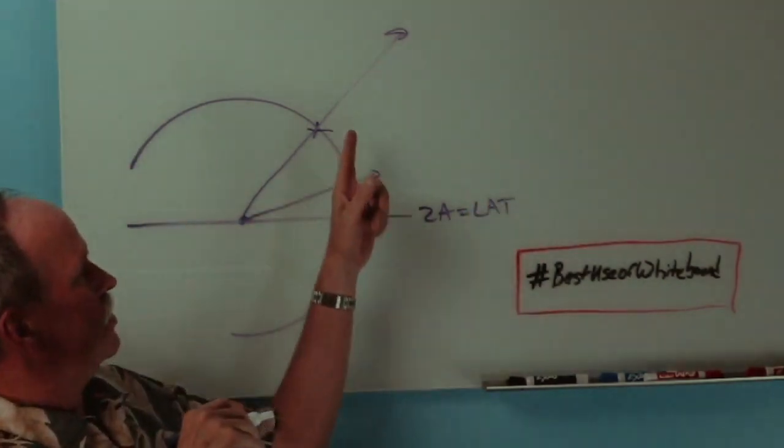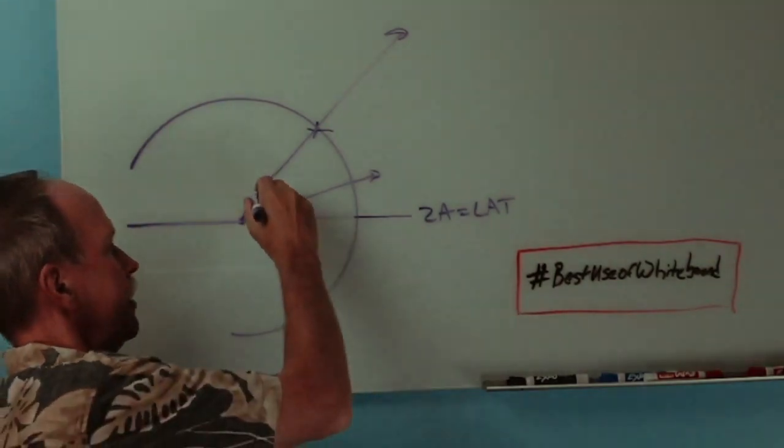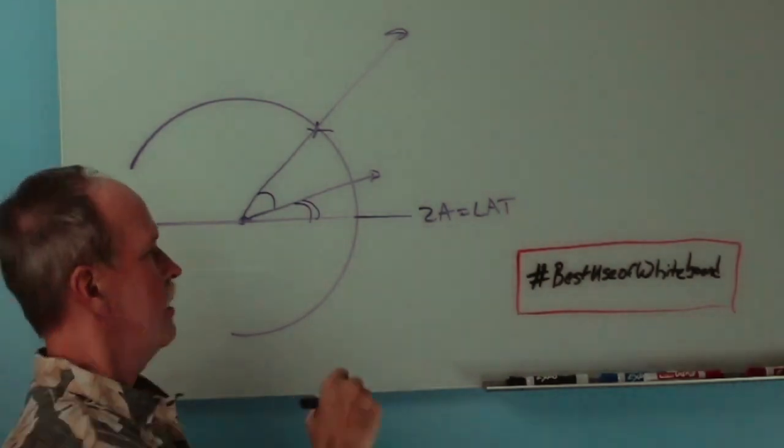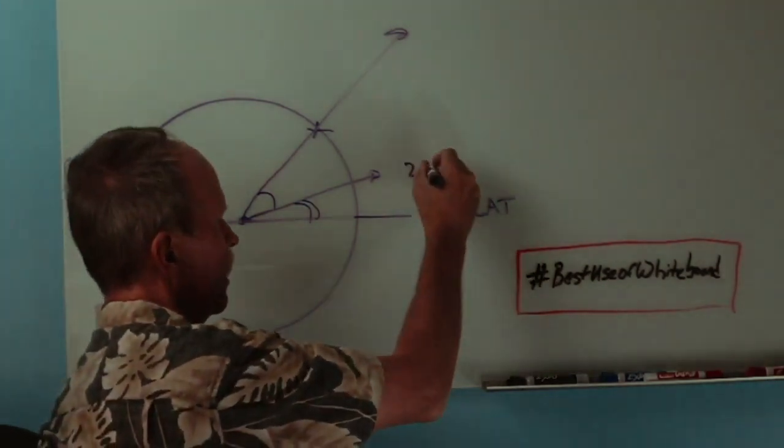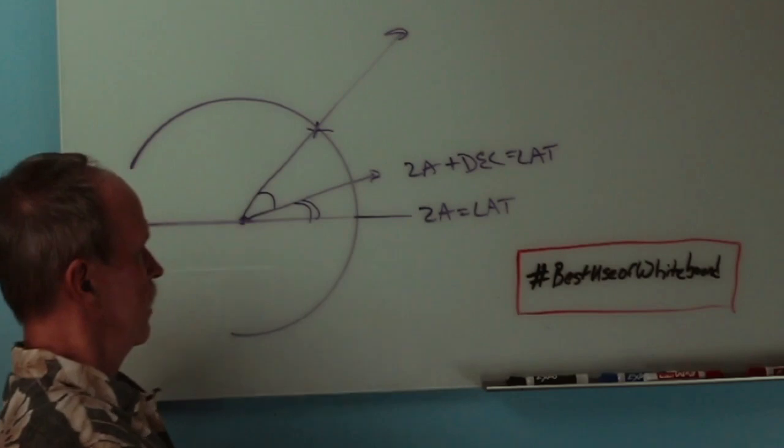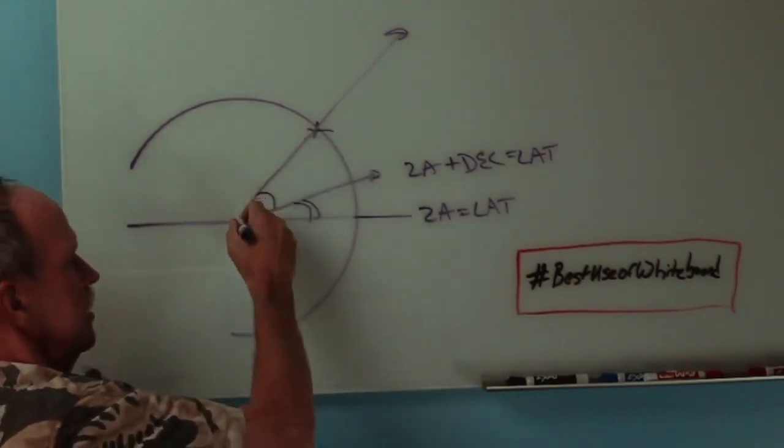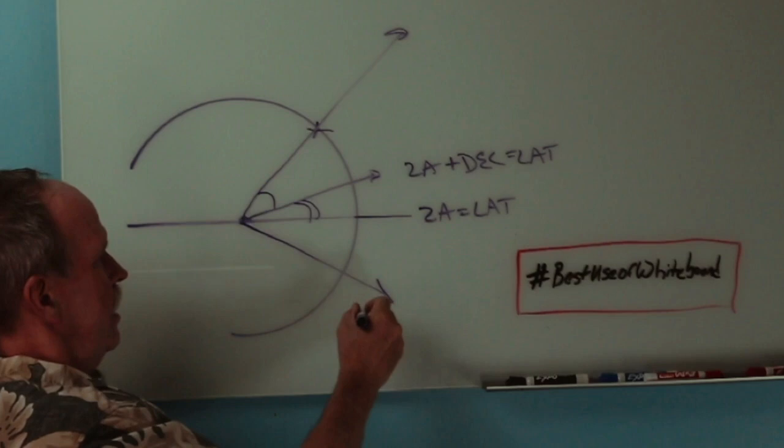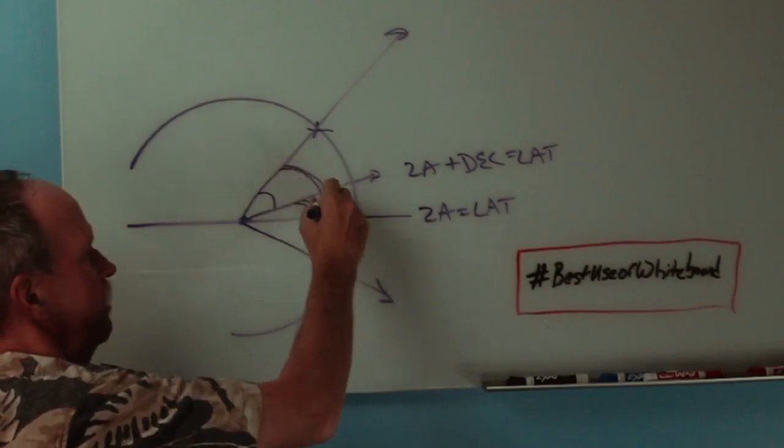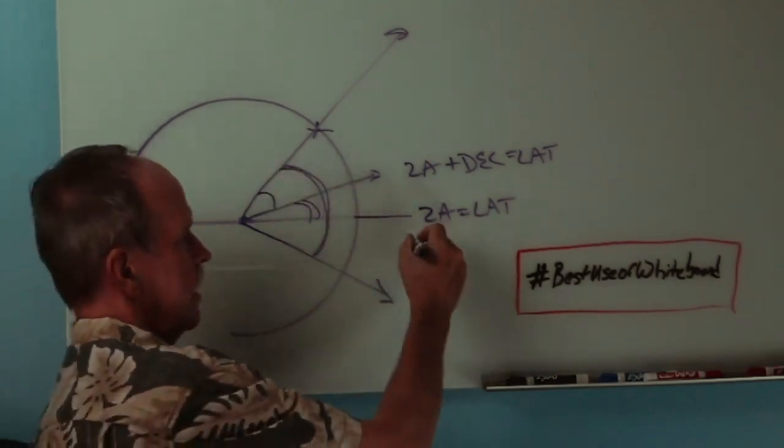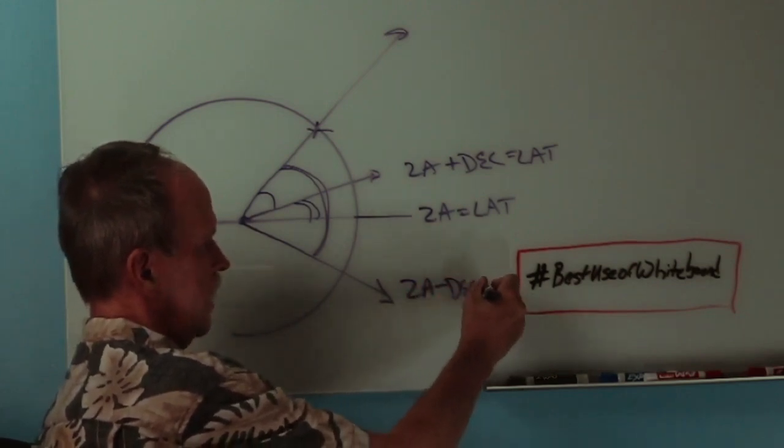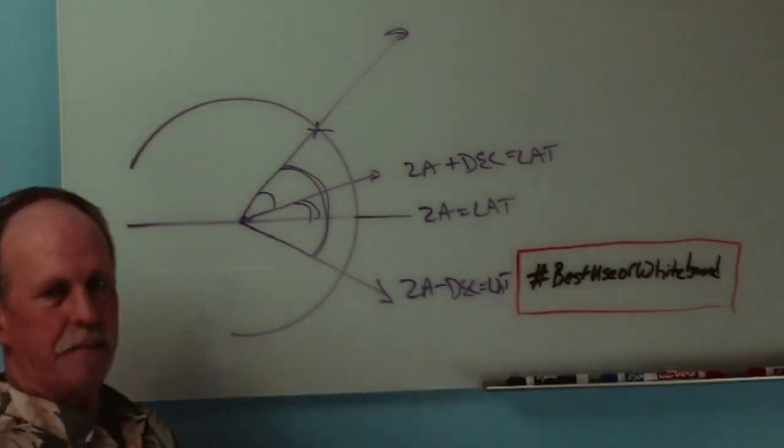If the Sun is closer to us than the equator, we're going to read this angle right here. We have to add to it the declination angle to get our latitude. So it would be zenith angle plus declination equals latitude. If the zenith angle was here and the Sun was down here, we would take, we're going to measure this entire angle with our sextant. So we have to take zenith angle minus declination equals latitude. Does that make some sense?